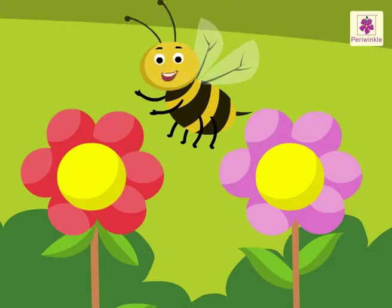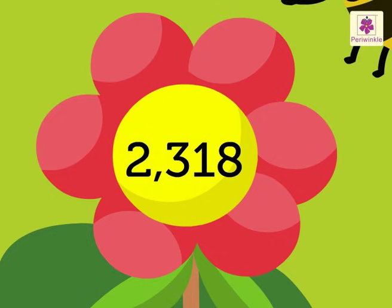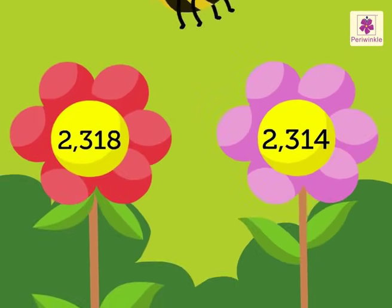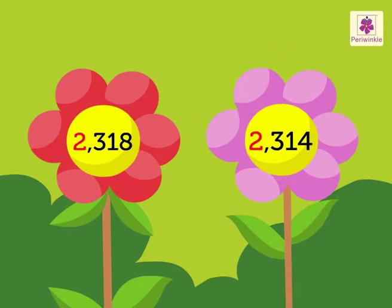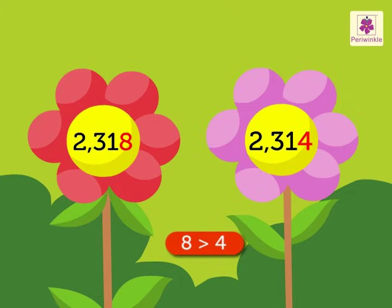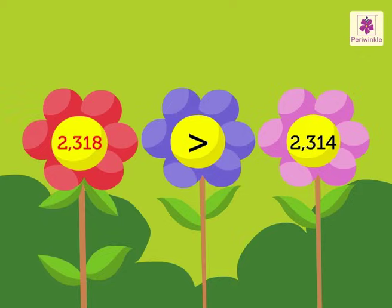Let us try one more example. Look at the numbers 2318 and 2314 on the flowers. Both the numbers have 2 in the thousands place. So we compare the digits in the hundreds place. Both the numbers have 3 in the hundreds place. So we compare the digits in the tens place. Both the numbers have 1 in the tens place. So now we compare the digits in the ones place, that is 8 and 4. Here, 8 is greater than 4. Thus, we say 2318 is greater than 2314.